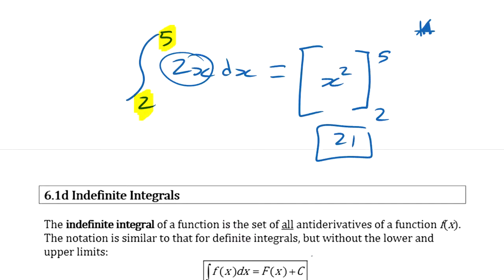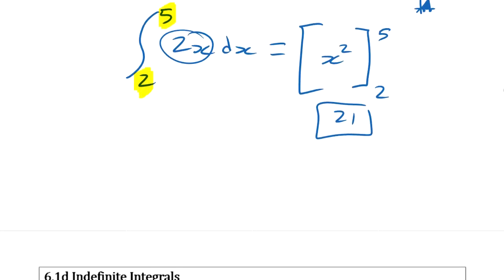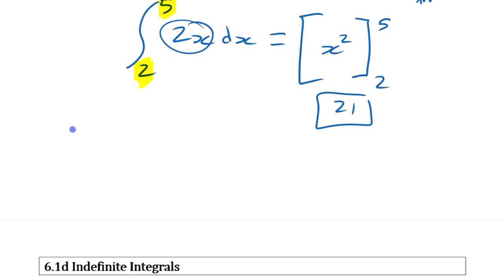Now, if you think back to finding derivatives, we had the same situation here with derivatives. We could say, if we had a function like y equals x squared, we could say, what's the derivative? Let's call this f of x, just to keep it easier to use. We could say, what's the derivative of that function? And you say, it's 2x.